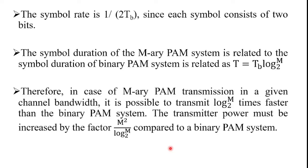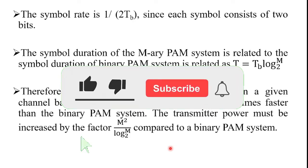In a baseband M-ary PAM transmission system, the input binary sequence is converted into an M-level PAM pulse train. The detection process is the same as binary PAM at the receiver section.